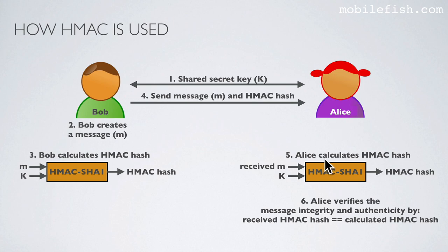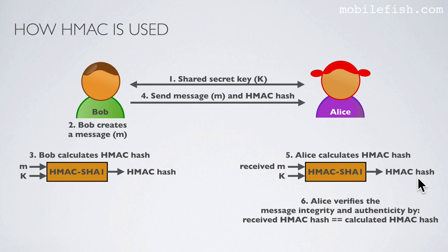Step 4: Bob sends the message and the HMAC hash to Alice. Step 5: Alice calculates her HMAC hash. She uses the received message and the shared secret key as input in the same HMAC SHA-1 algorithm, which outputs a HMAC hash.